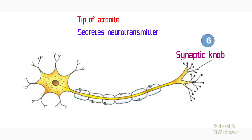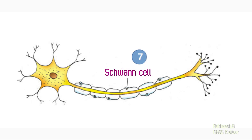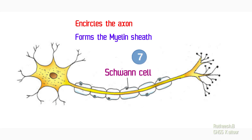The next part of a neuron is the Schwann cell. Axon is the longest branch of a neuron. The Schwann cell is a cell which encircles the axon. The Schwann cell repeatedly encircles the axon to form a sheet called myelin sheath. The function of Schwann cell is to form the myelin sheath around the axon. We can study the structure and function of myelin sheath in the next part.